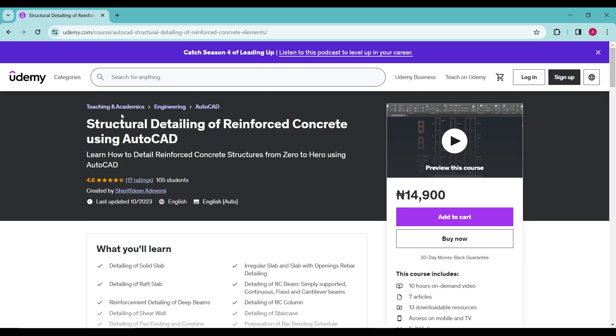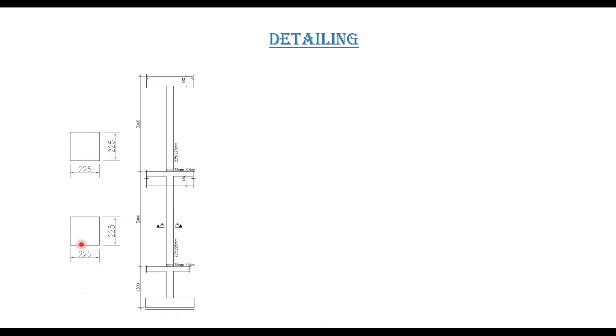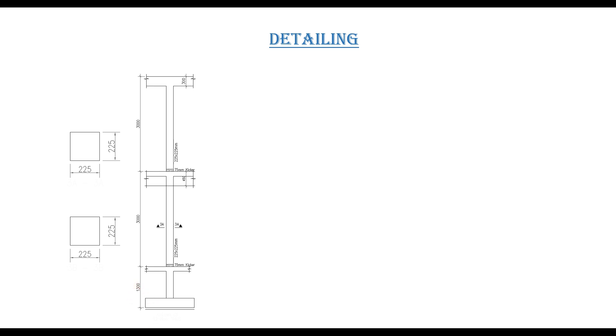I will leave the link to this course in the description of this video where you can get it and subscribe to it. Continuing with our class, let us take an example of a column detail. The column we want to detail starts from the foundation — we are assuming a pad footing for the column — and the depth from the base of the foundation to the top of the blinding concrete is 1.3 meters, which gives us 1300mm in the drawing.